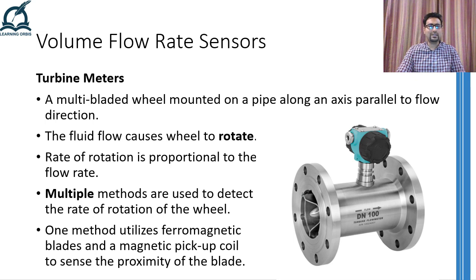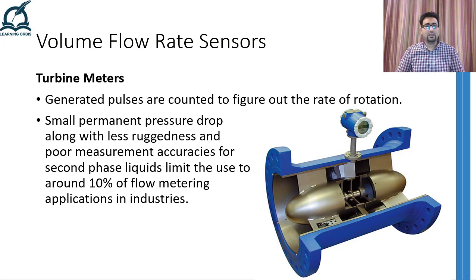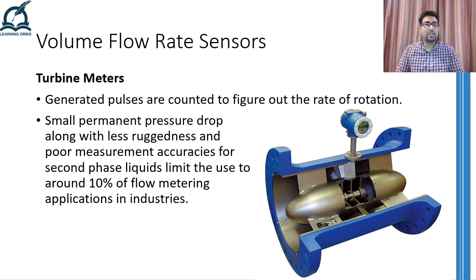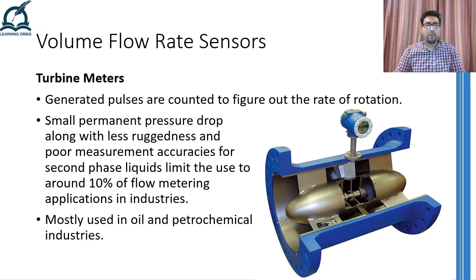Methods other than magnetic proximity sensors can also be employed to sense the rotation of the wheel. For example, some forms of turbine meters utilize fiber optics to sense the light reflected by the turbine blades, hence generating an output whenever a reflection is received. The downsides of turbine meters include a small amount of permanent pressure drop induced into the system, along with the turbine blades being prone to corrosion and wearing due to the fluid rubbing against them. Furthermore, the accuracy of turbine meters drops considerably if it has been calibrated for a pure liquid and is being used to measure the flow rate of liquids that contain another insoluble liquid, for example water particles present in oil. Turbine meters find most of their applications in oil and petrochemical industries.